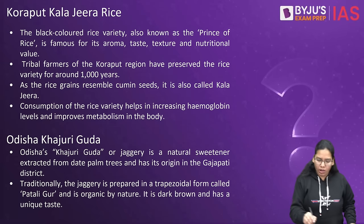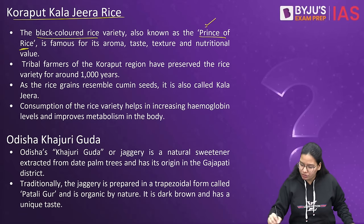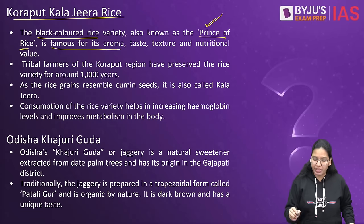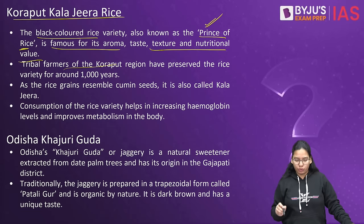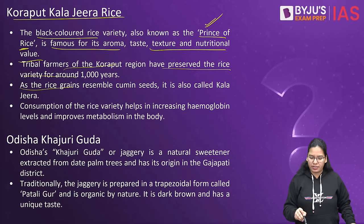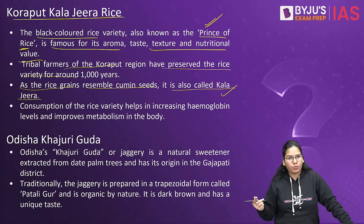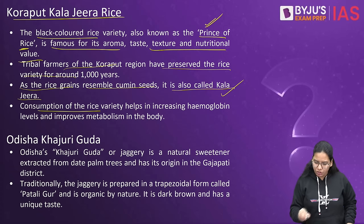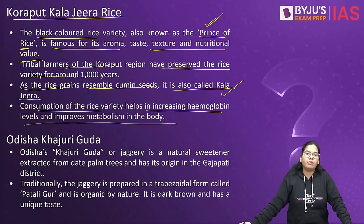Third GI product: Koraput Kala Jeera rice — the black-colored rice variety also known as the 'prince of rice.' It is famous for its aroma, taste, texture, and nutritional value. Tribal farmers of the Koraput region have preserved the rice variety for around 1,000 years. As the rice grains resemble cumin seeds, it is also called Kala Jeera. Consumption of this rice variety helps in increasing hemoglobin levels and improves metabolism in the body.